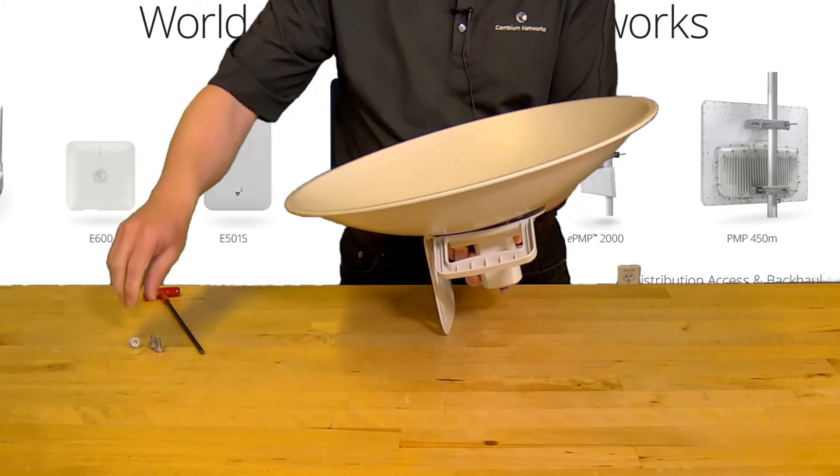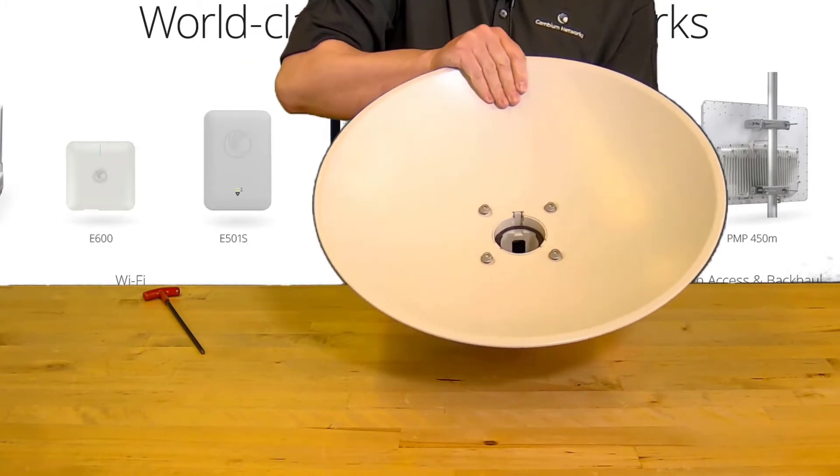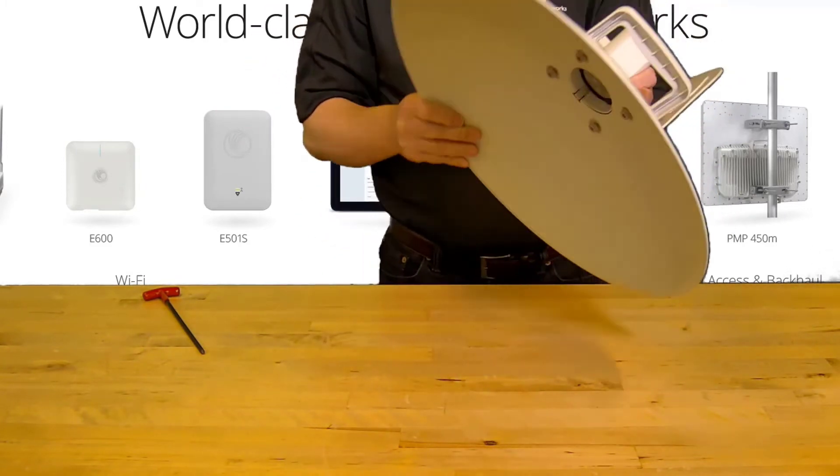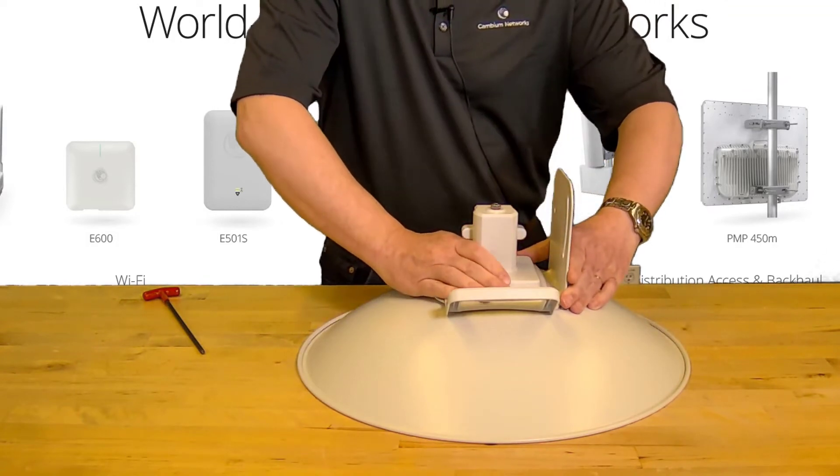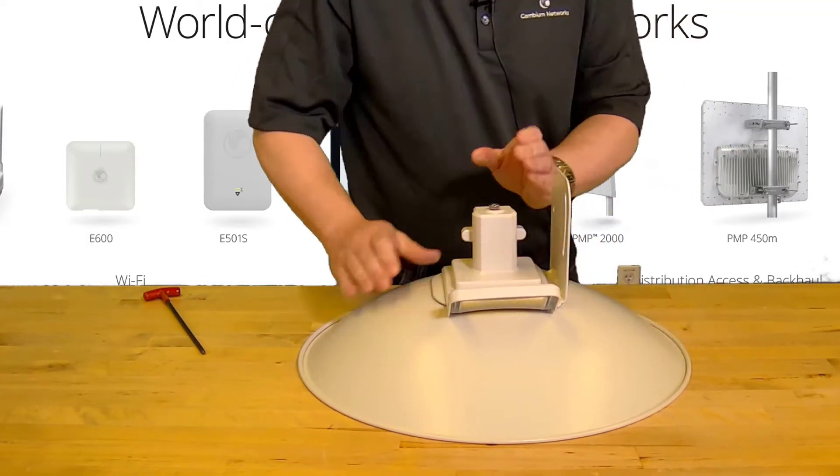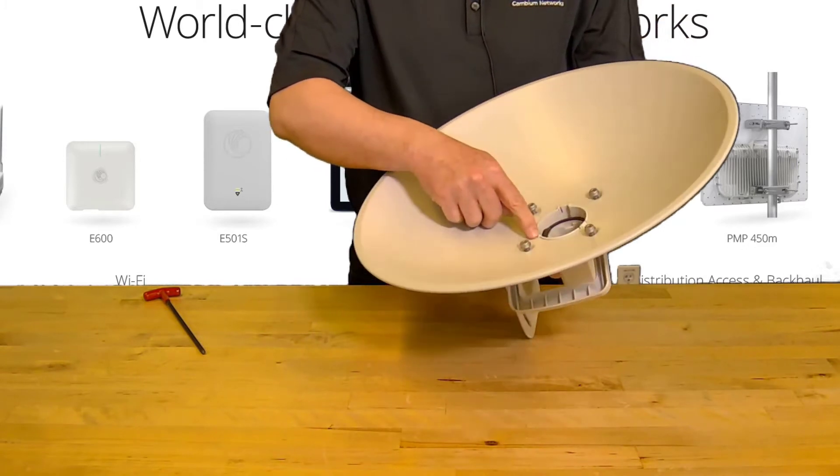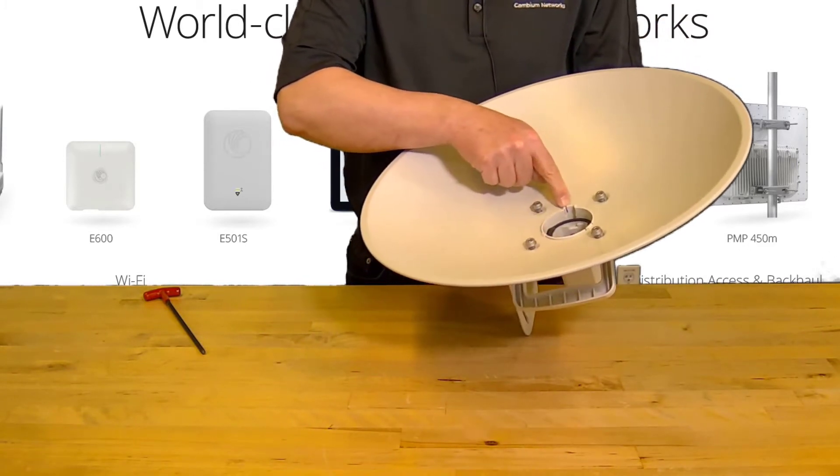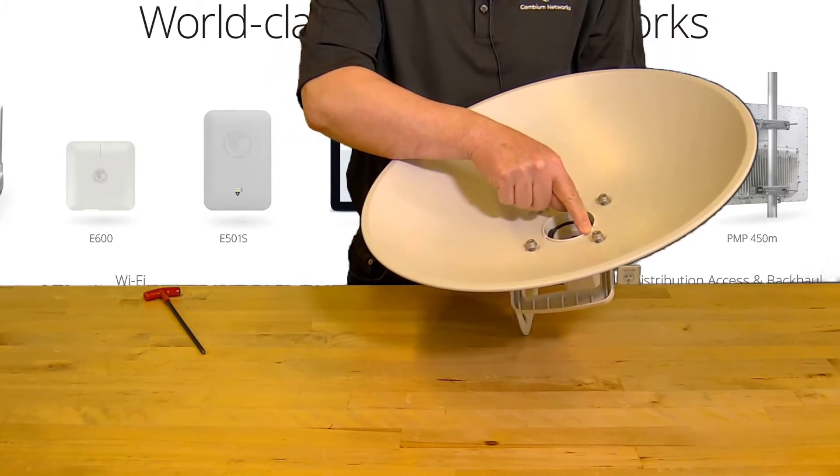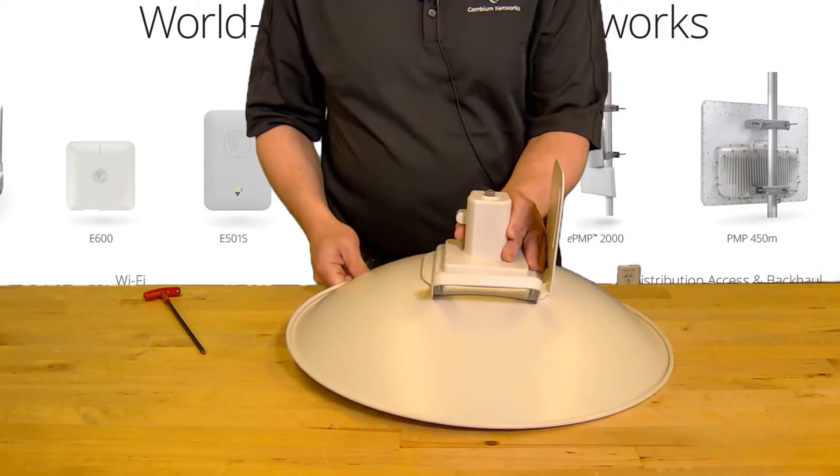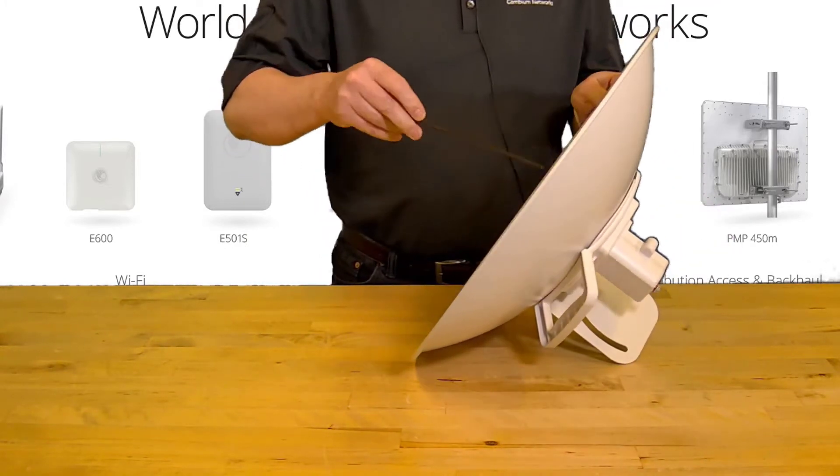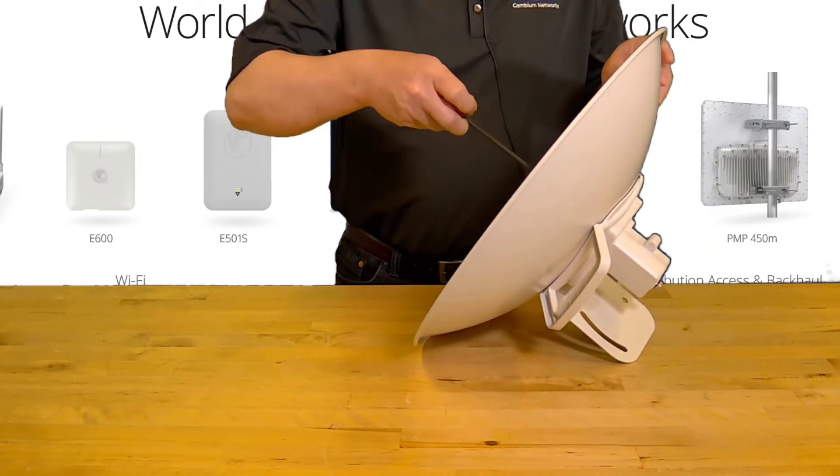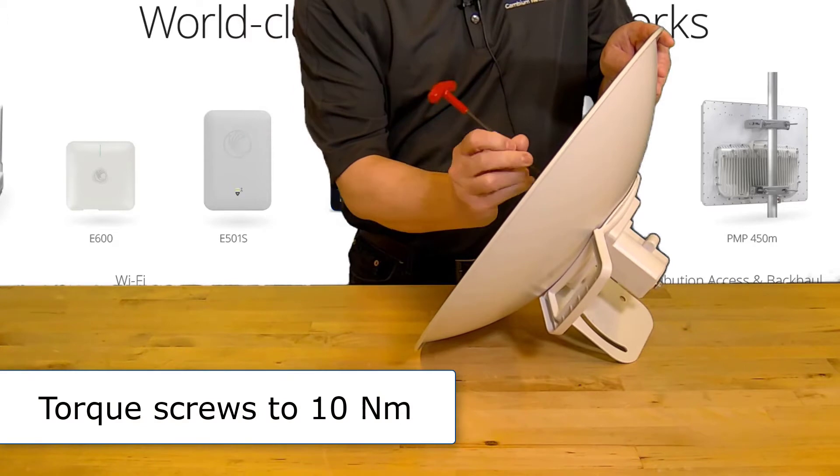Loosely tighten the screws by hand. Lay the dish on a flat surface and press down on the bracket until it clicks into place. Check that all of the clips are fully engaged. The flange screws should now be tightened with the M5 hex driver, firmly securing the dish to the bracket. Torque these screws to 10 Newton meters.